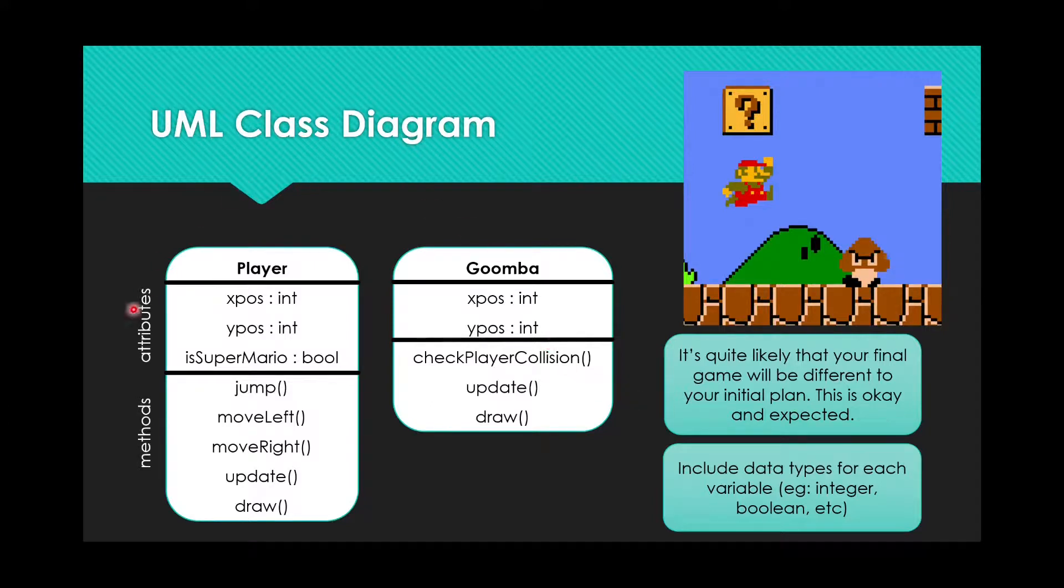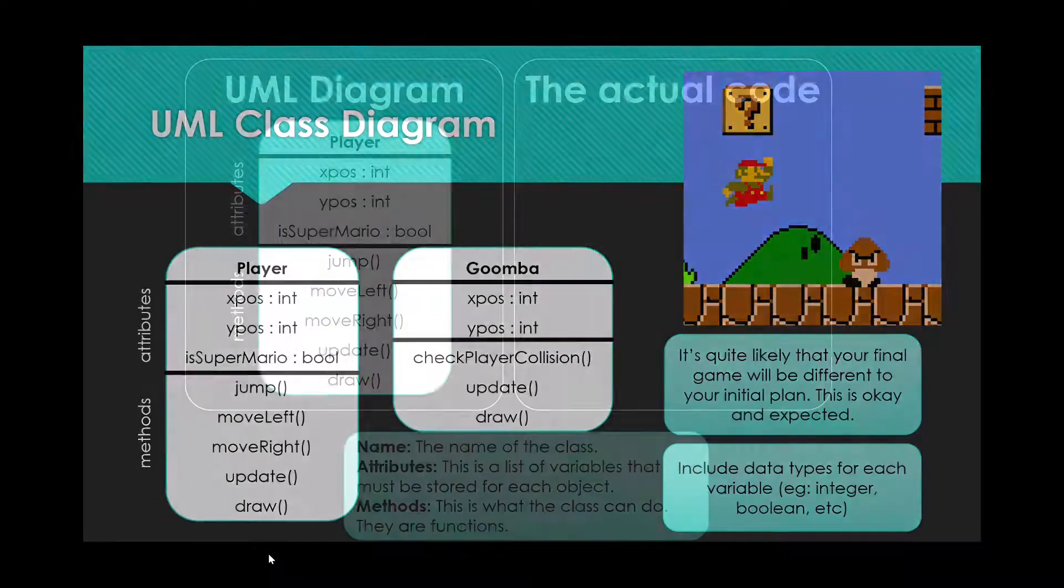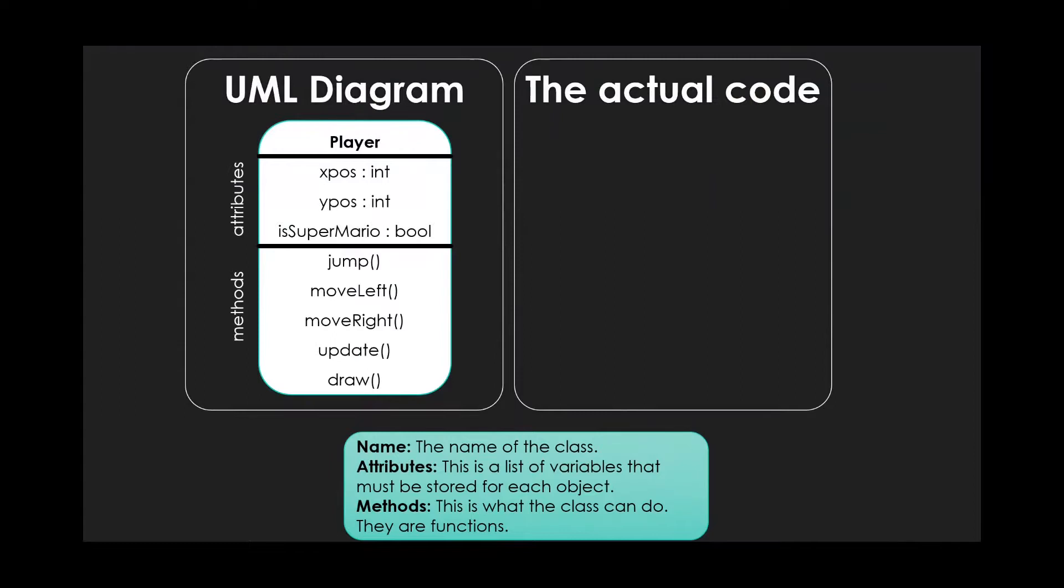Let's have a look at how this one here would translate into code. There we go. So I've got the UML diagram on the left. I've got a little reminder about what these things mean. The name up there, the attributes, which are the variables, and the methods, which are the functions, the things that it can do. And let's have a look what that would look like in actual code.